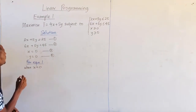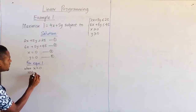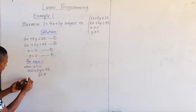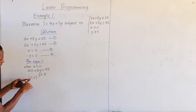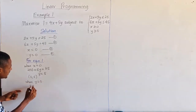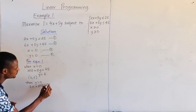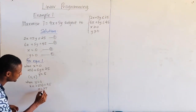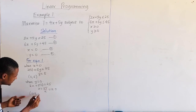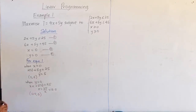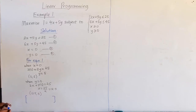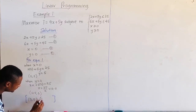For equation 1, to get these points, we will put in the values x is equal to 0 and y is equal to 0. When x is equal to 0, we will have 2 times 0 plus 5y, and that will give us y is equal to 5. So we have the point (0, 5). Then, when y is equal to 0, that will give us 2x plus 5 times 0 is equal to 25, so x will be equal to 25 over 2, which gives us 12.5. So for equation 1, we have two points: (0, 5) and (12.5, 0).